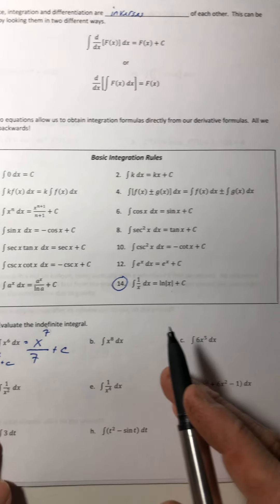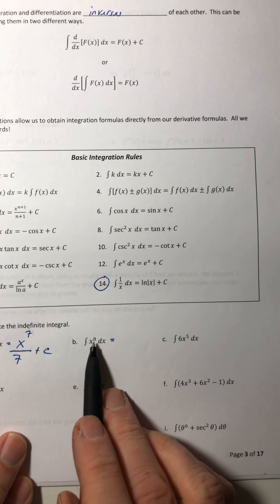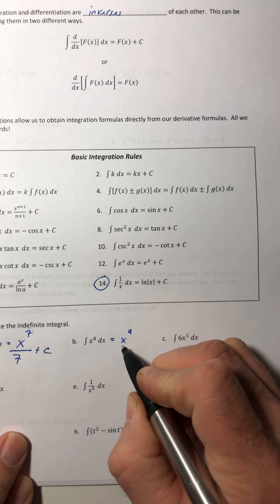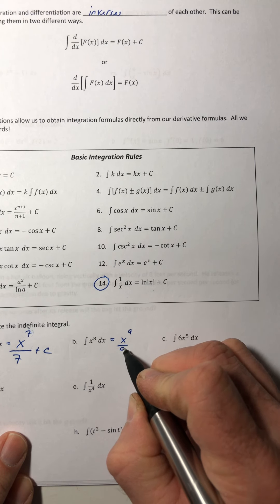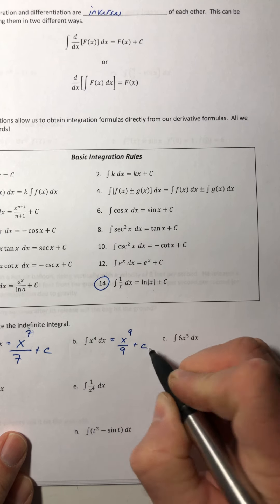Okay, so if we did the same thing with this one, you've got to increase the power by one, divide by the new exponent of nine, plus C.